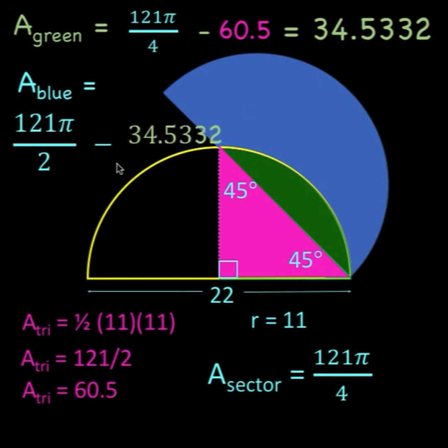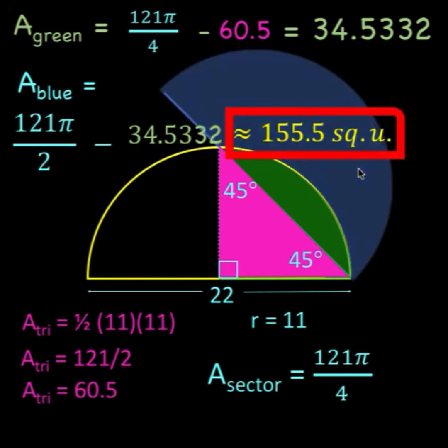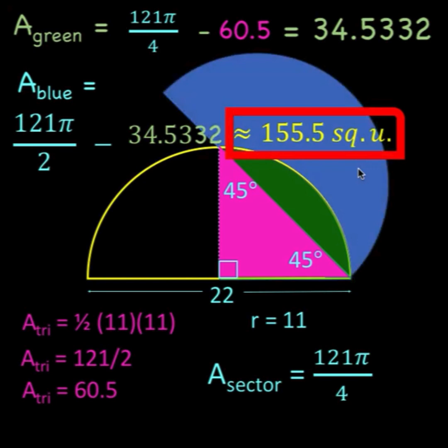Computing now for the value of this, we arrive at approximately 155.5 square units for the area of this blue shaded region. And this is now our final answer. Thank you.